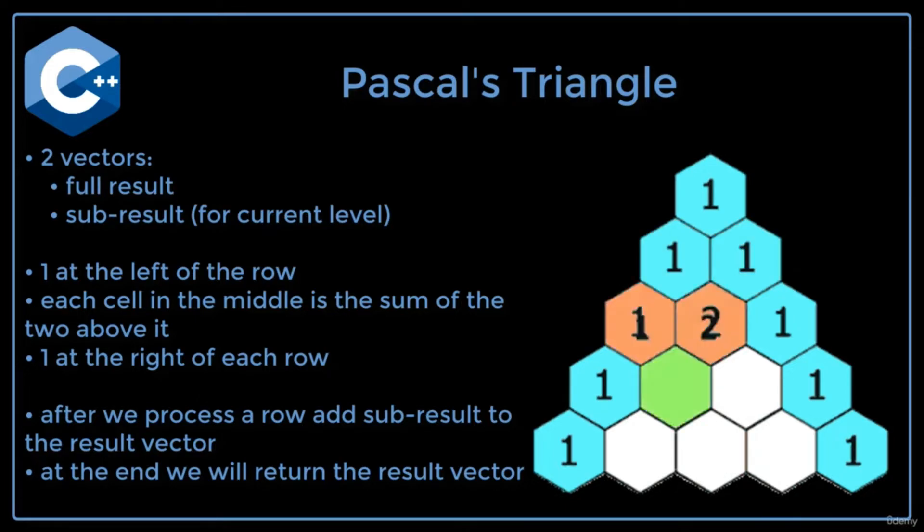We'll start out by adding one to the subresult vector. Then for each of the middle cells in the triangle, we will calculate the sum of the two above it and use that value for the result in the cell we are currently on.